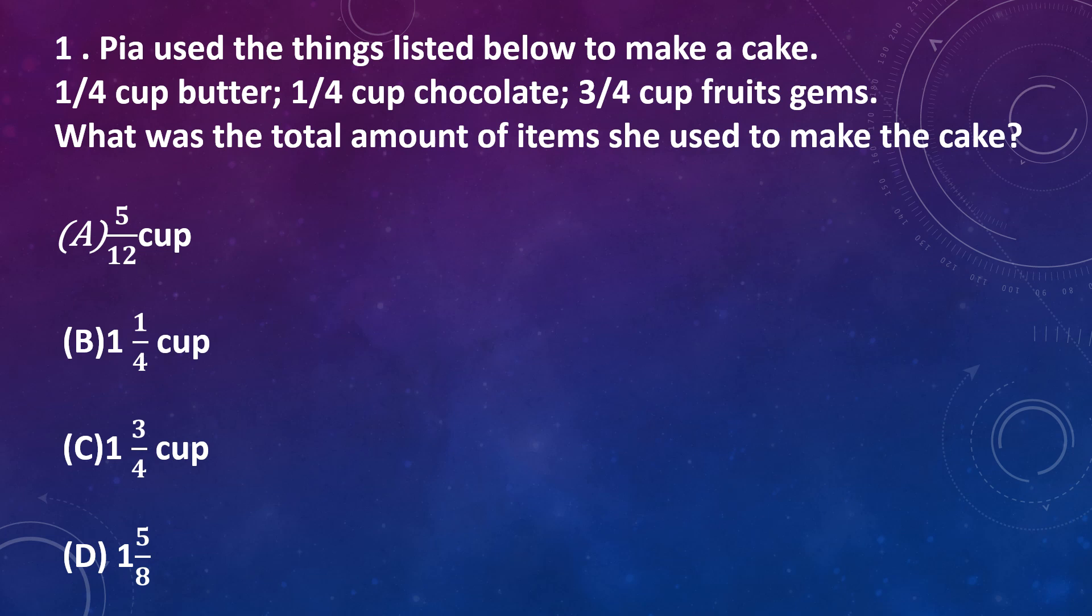Pia used 1 by 4 cup butter, 1 by 4 cup chocolate and 3 by 4 cup fruit jams. So if we add all of these, we get 1 by 4 plus 1 by 4 plus 3 by 4, that is 5 by 4, and 5 by 4 can be written as 1 and 1 by 4. Correct answer is option B, 1 and 1 by 4 cup.